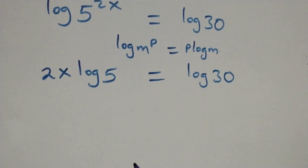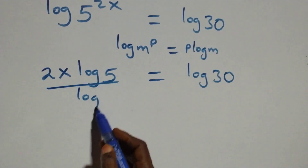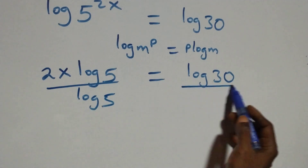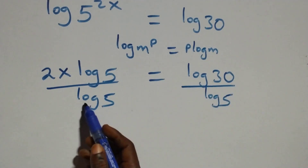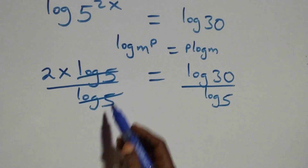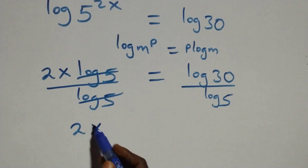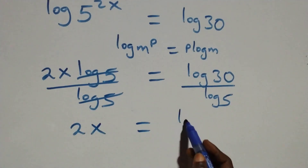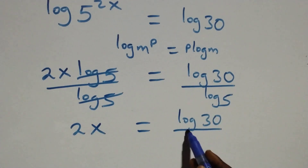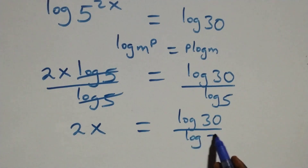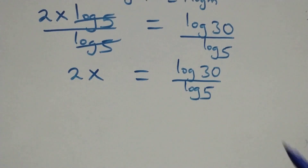Then here we divide both sides by log 5. We divide this side by log 5 and also divide this side by log 5. The log 5 terms cancel each other, and we have 2x equals to log 30 over log 5.